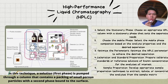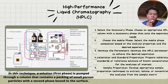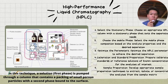High Performance Liquid Chromatography, or HPLC, is also a technique used to preserve art. In this technique, a solution is pumped through a column containing a packing of small porous particles. The first procedure is to select the stationary phase — choose an appropriate HPLC column with a stationary phase that suits the separation needs. Second, choose the mobile phase composition based on the analyte properties and the desired separation. Third, optimize the HPLC parameters to achieve the desired separation. Fourth, prepare calibration standards or reference solutions of known concentration for the analyte of interest.